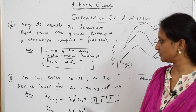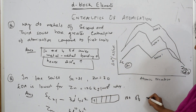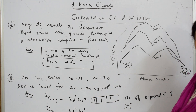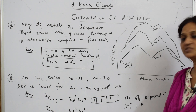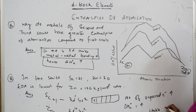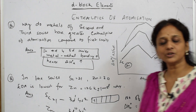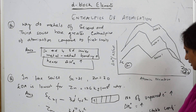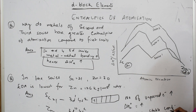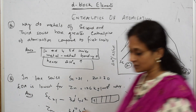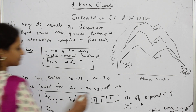Scandium has one unpaired electron while zinc is completely filled. Using the same concept — more unpaired electrons means higher ΔH°a — but in zinc's case, it has a stable fully filled configuration. Due to this stable configuration, zinc does not participate in interatomic attraction or metallic bonding. Metal-metal bonding is not observed in zinc, so its enthalpy of atomization is the least.